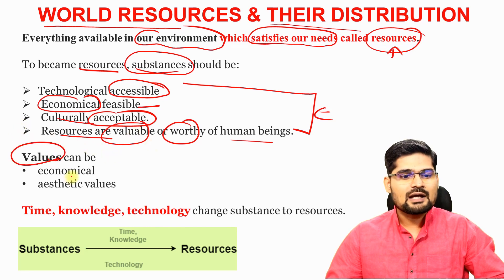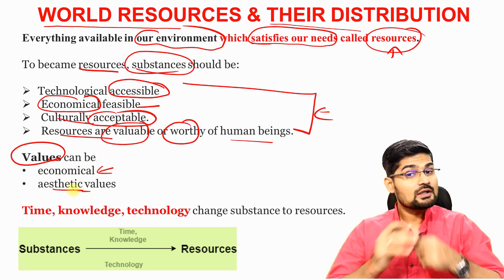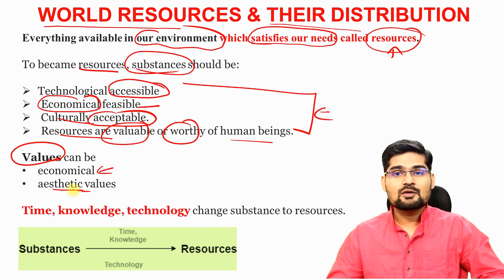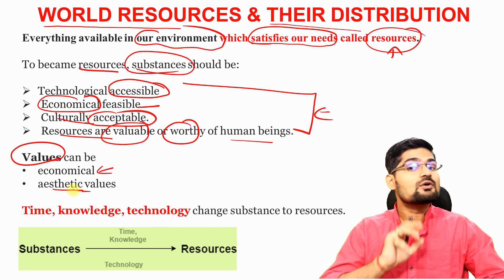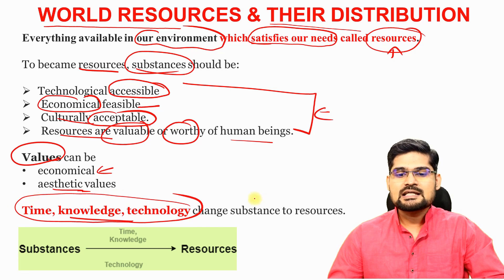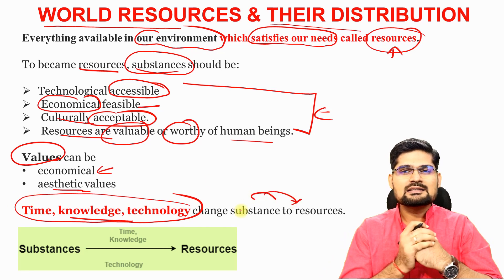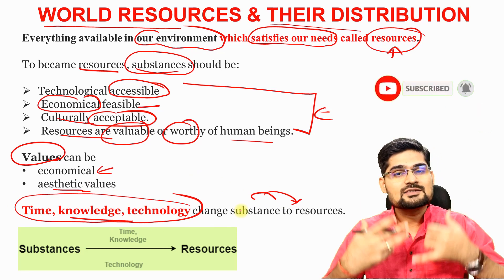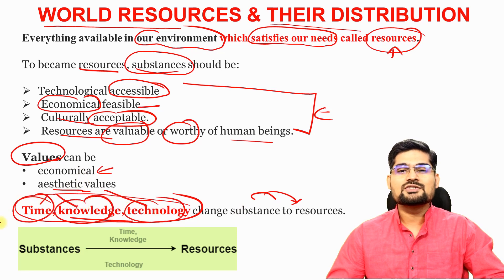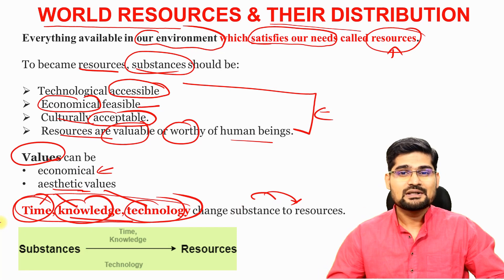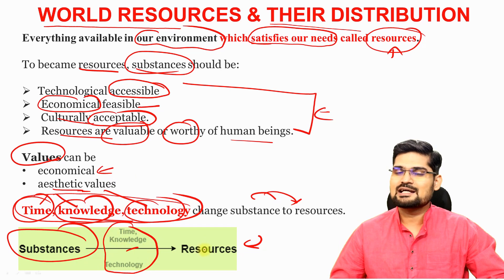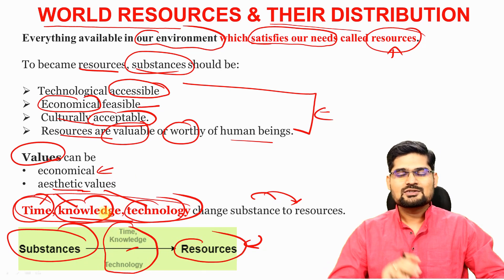Value here can be economic values as well as aesthetic values. Resources could be not just economical but also aesthetic — what is beautiful, good for the environment, and gives us pleasure can also be a resource. Time, knowledge, and technology are the three components that change a substance into a resource. This idea can be represented through a flow diagram: substance, under the impact of technology, knowledge, and time, can be converted to resources.